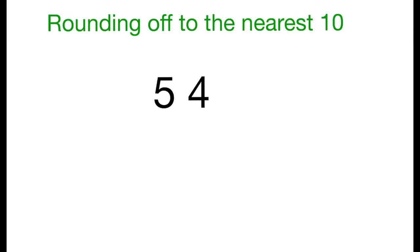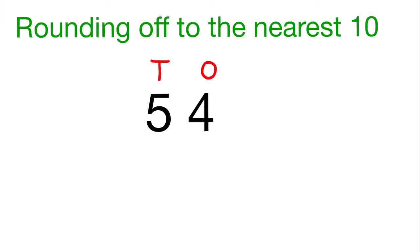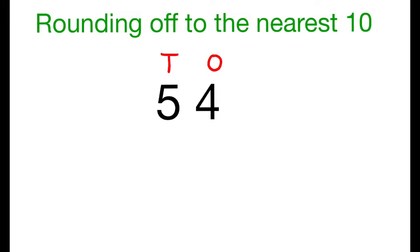Rounding off to the nearest tens. Consider the number 54. The digit 4 is in the ones place and the digit 5 is in the tens place. To round off a number to the nearest tens, first we should see whether the digit in the ones place is less than 5, equal to 5, or greater than 5. Accordingly, we make changes for the digit in the tens place.